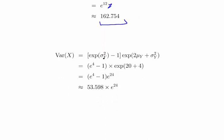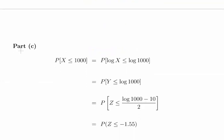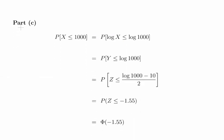Something very similar here for the variance: the exponential of sigma squared of Y minus 1, so that is the exponential of 4 minus 1, times the exponential of 2 times mu plus sigma squared, which is 2 times 10 plus 4, which is the exponential of 24. That's a really big number, so we'll just leave it like that: 53.598 times the exponential of 24, which is a massive number, but don't worry about that.